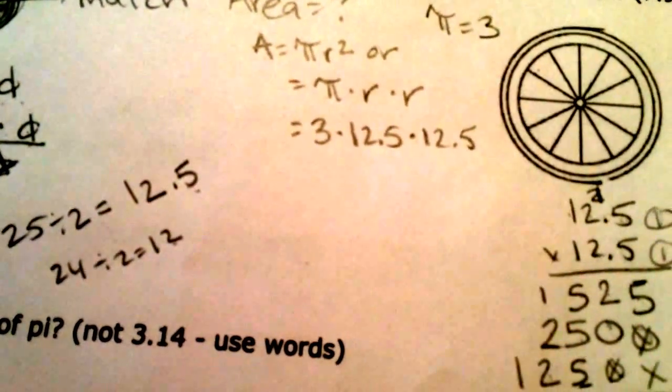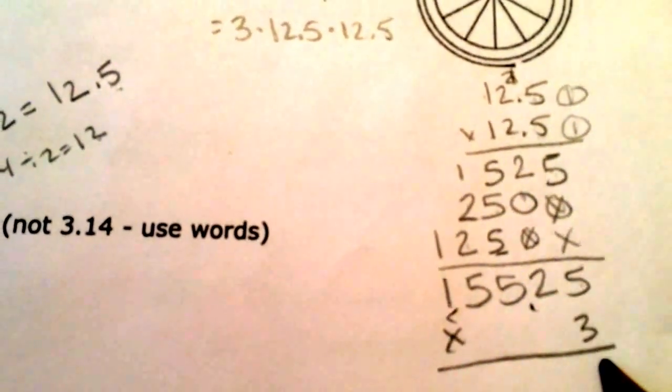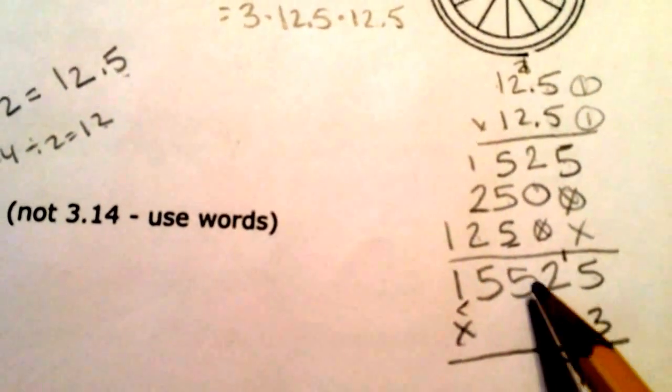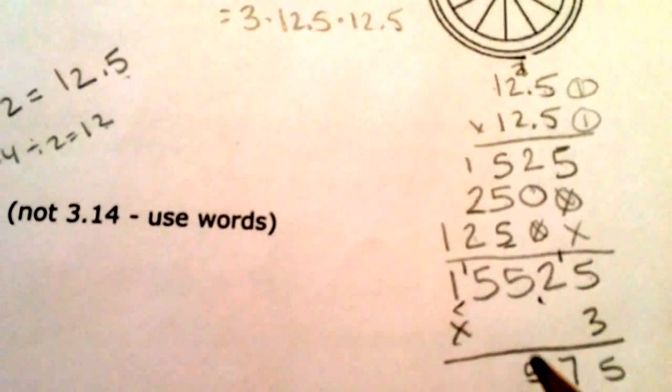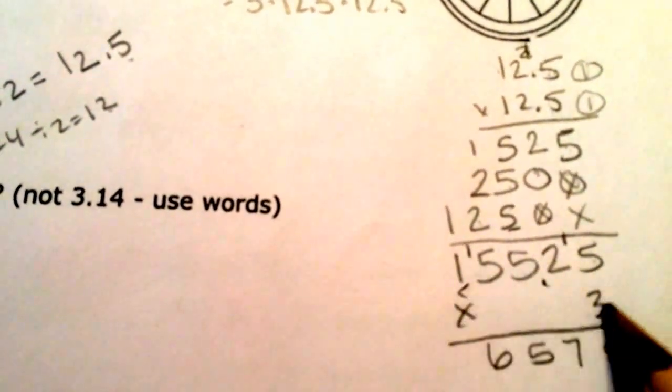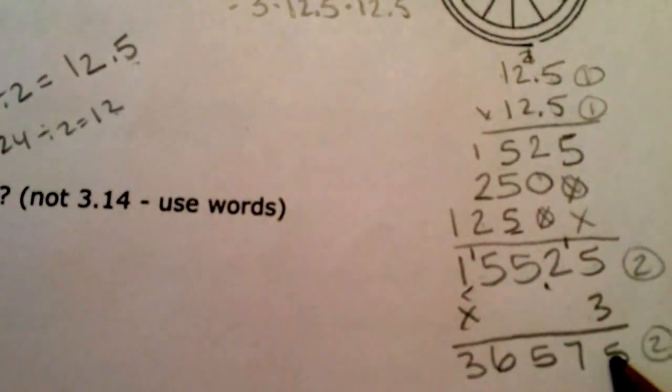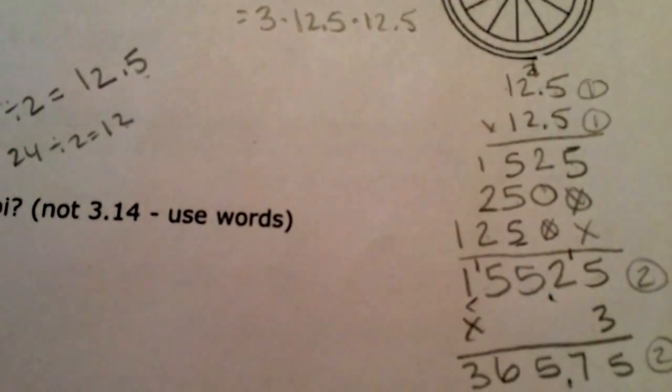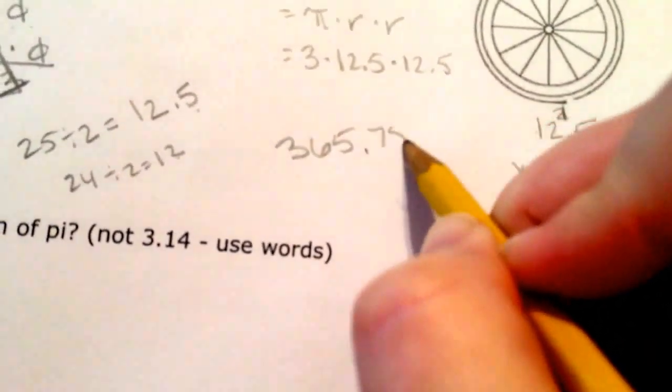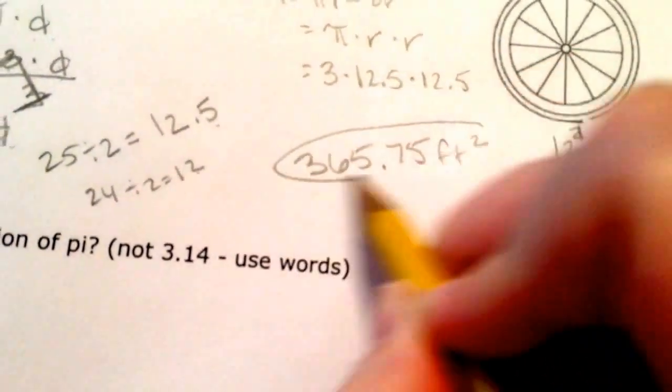Now I have to multiply that by 3, so I'm just going to add it on down here. 5 times 3 is 15, carry my 1. 3 times 2 is 6 plus 1 is 7. 5 times 3 is 15, carry my 1. 5 times 3 is 15 plus 1 is 16. 1 times 3 is 3. I have 2 numbers behind the decimal, so 2 numbers behind the decimal here. 365, 75. So my answer is 365.75 feet squared.